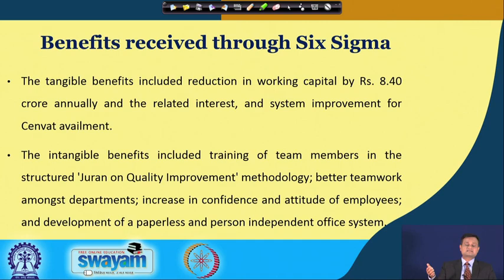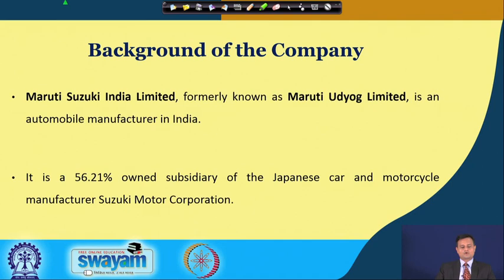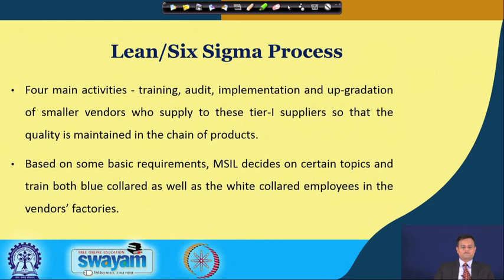Organization three is Maruti Suzuki India Limited (MSIL), formerly known as Maruti Udyog Limited — a well-known automobile manufacturer in India and a 56.21% owned subsidiary of Suzuki Motor Corporation. They integrated Lean and Six Sigma and applied this approach to improving value in their supply chain through four main activities: training, audit, implementation, and upgradation of smaller vendors supplying to Tier 1 suppliers.